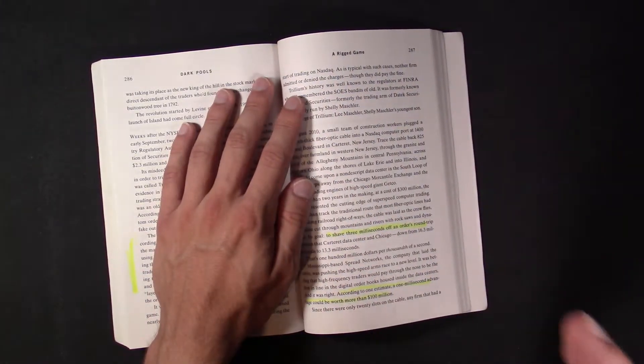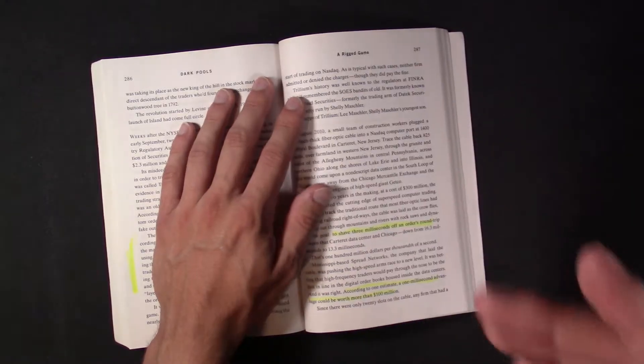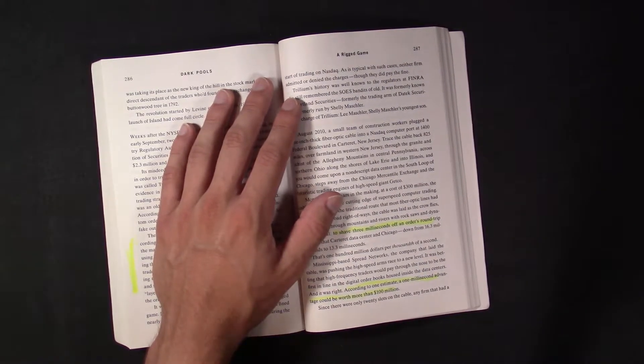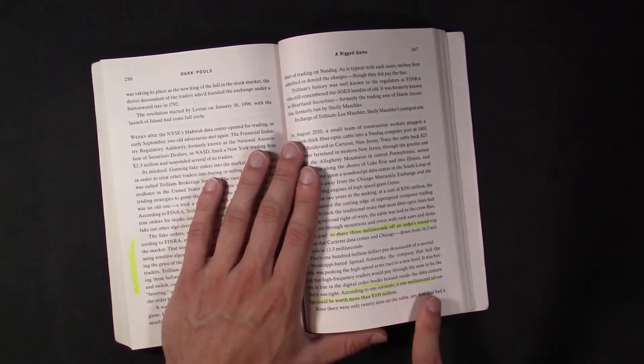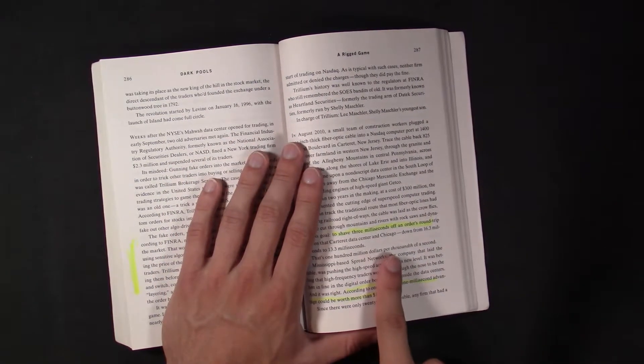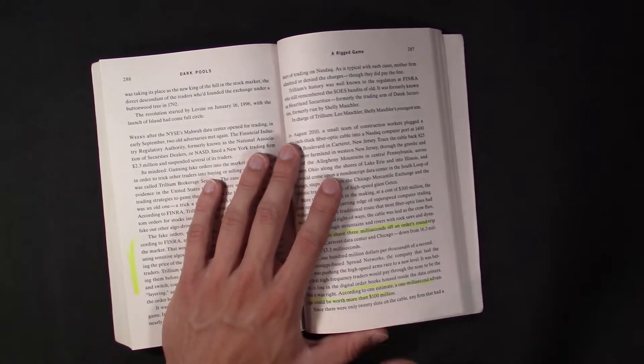Or, like, hundreds of miles. Or thousands of miles, whatever. That could cost millions of dollars. So, they can save milliseconds on their order flows. Milliseconds on their order flows for a hundred million dollars.